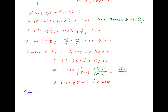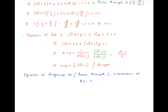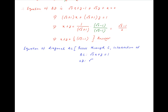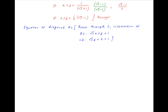Similarly, the diagonal AC of the parallelogram passes through the point of intersection of lines BC, whose equation is √3x + y = 1, and CD, whose equation is √3y + x = 1. Therefore, the equation of diagonal AC can be written as (√3x + y − 1) + λ(√3y + x − 1) = 0, where λ is a parameter.